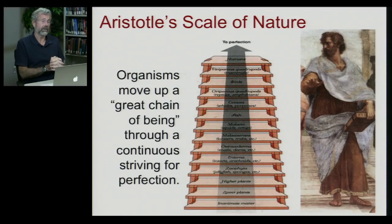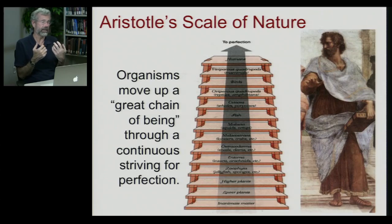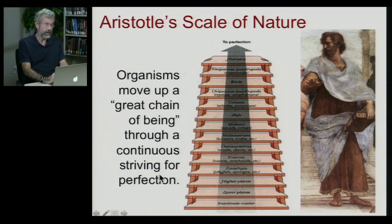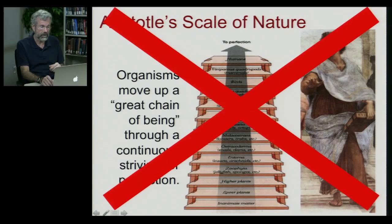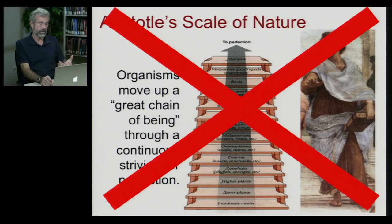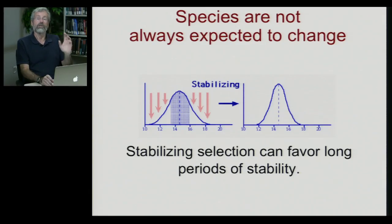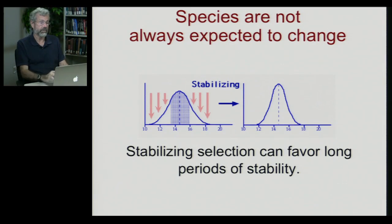When thinking about long-term evolutionary trends, it is common for people to assume something like Aristotle's scale of nature — that organisms are always striving to evolve, moving up a great chain of being through continuous striving toward perfection. We know this is wrong. Given what we know about evolution and the distribution of species around the world, evolutionary change, while often quite dramatic and profound, is not inevitable. Species are not always expected to change. Directional selection may lead to a whole new form, but there are many circumstances where we expect stabilizing selection, and if the norm is favored by natural selection, there is no reason for a species to change.